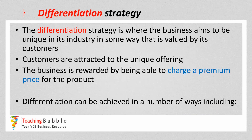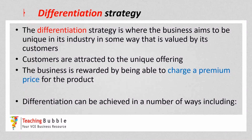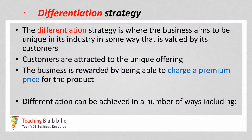Porter's next generic strategy is the differentiation strategy, where the business aims to gain a competitive advantage by being unique in some way that's valued by their customers. As a result of differentiating themselves and having this unique offering, customers are attracted to the business or its products. That uniqueness allows the business to charge a premium price, so they no longer need to compete heavily on price. This strategy is about the business being the best in its industry, gaining a competitive advantage. With differentiation, there are many different ways businesses can be unique and compete on that differentiation.